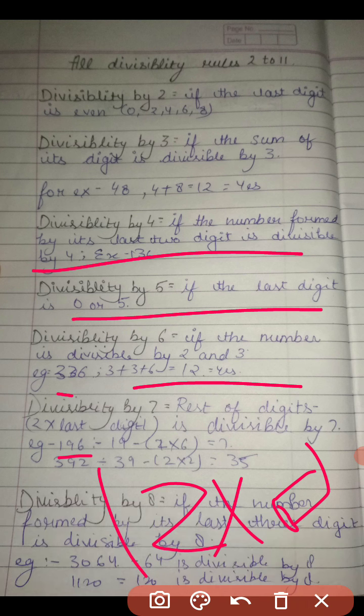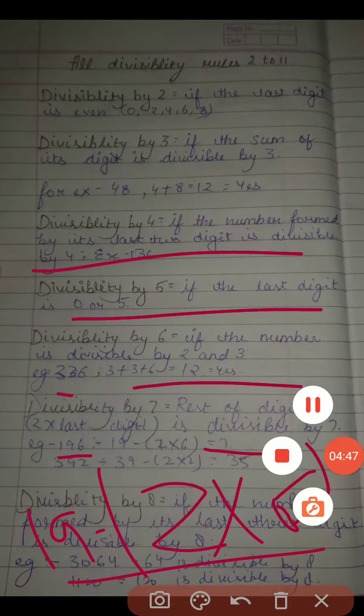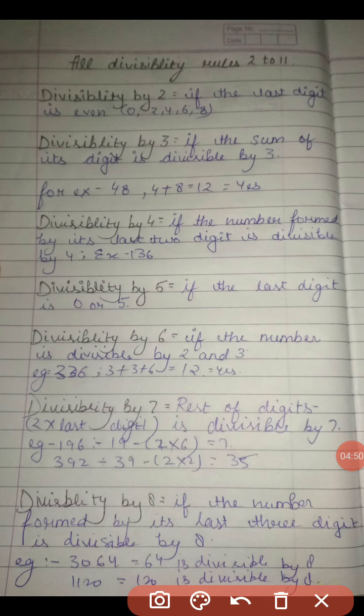And rest of digits means 19, minus. When we solve it, we get the answer of 7, and 7 is divisible by 7. You know that.